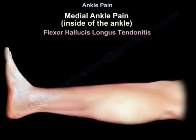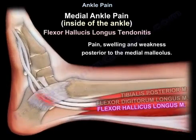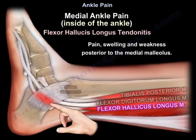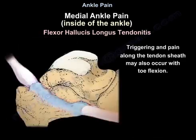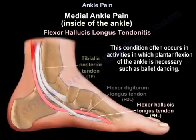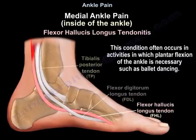Flexor hallucis tendonitis presents with pain, swelling, and weakness posterior to the medial malleolus. Dorsiflexion of the big toe may be reduced when the ankle is placed in dorsiflexion. Triggering and pain along the tendon sheath may also occur with toe flexion. This condition often occurs in activities in which plantar flexion of the ankle is necessary, such as ballet dancing.